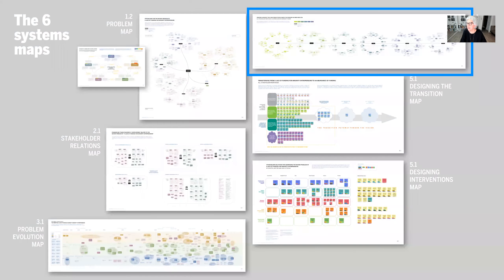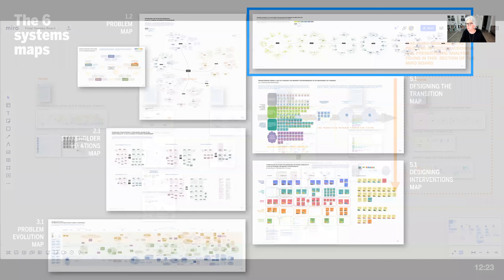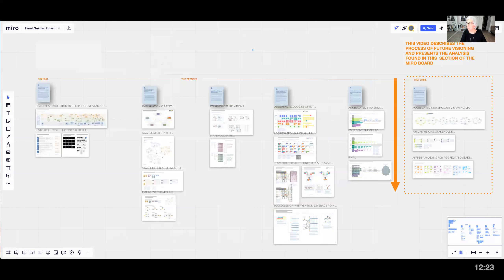The data gathered from our four stakeholder groups resulted in six systems maps, and this video reports on the future visions map highlighted in the blue box and the insights that it produced. This step can be found on the far right side of the mirror board, with the systems map at the top and the analysis situated directly below it.